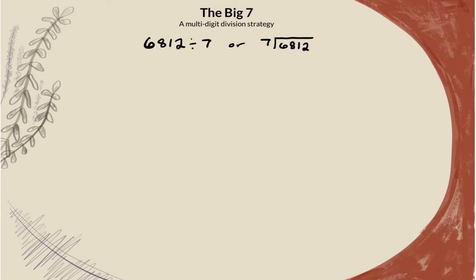All right, here we go. Big seven with a four-digit dividend, and that's the number that we are dividing. We have 6,812 divided by seven.